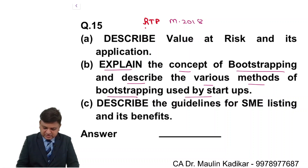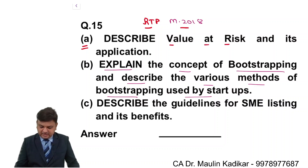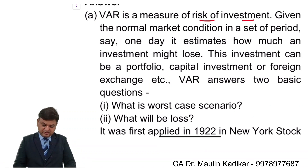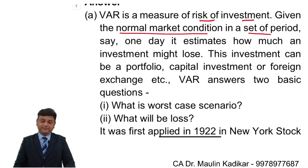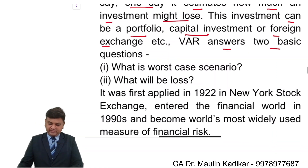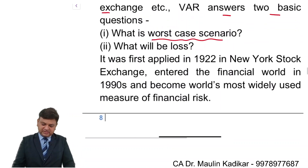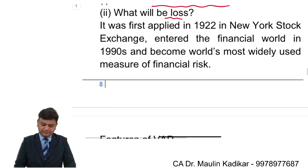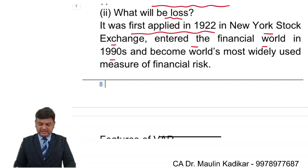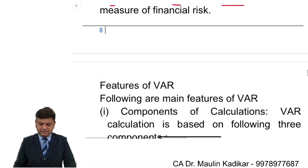Let us see a question from the Revisional Test Paper, May 2018, question number 15a: describe VAR and its application. VAR is a measure of the risk of investment given normal market conditions in a set time period, say one day. It estimates how much an investment might lose — this investment can be a portfolio, capital investment, or foreign exchange. VAR answers two basic questions: what is the worst case scenario, and what will be the loss? It was first applied in 1922 on the New York Stock Exchange, entered the financial world in the 1990s, and became the world's most widely used measure of financial risk.